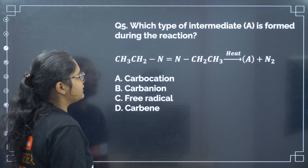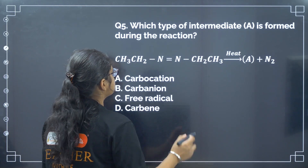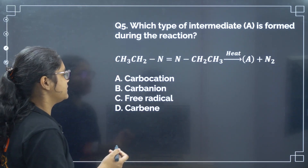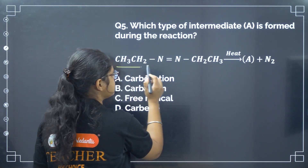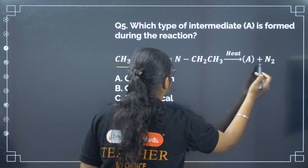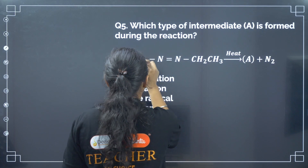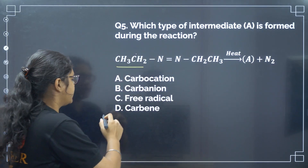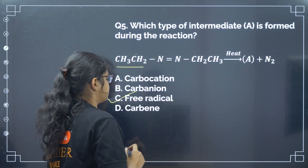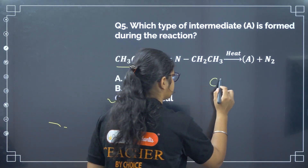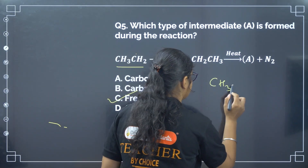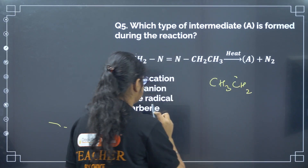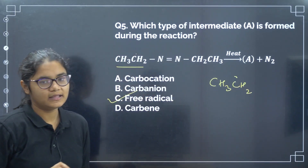Next: this type of intermediate A is formed during the reaction. The nitrogen group is released and we get free radicals — ethyl radicals. Correct answer is option number C.